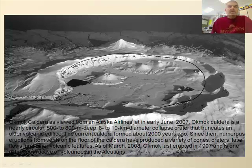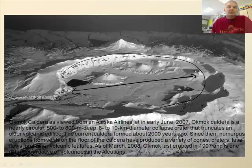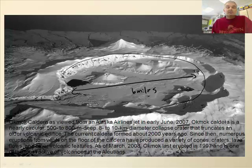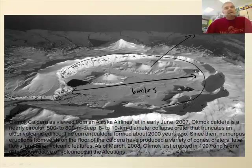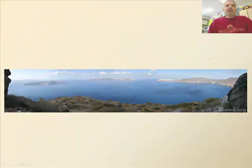The Amok caldera is 500 to 800 meters deep and 8 to 10 kilometers in diameter — about 6 miles across. All the magma at some point has shot out. This is one of the most active volcanoes in the Aleutian Islands up in the Alaska area.